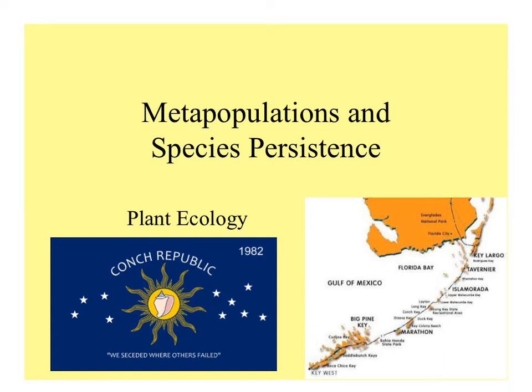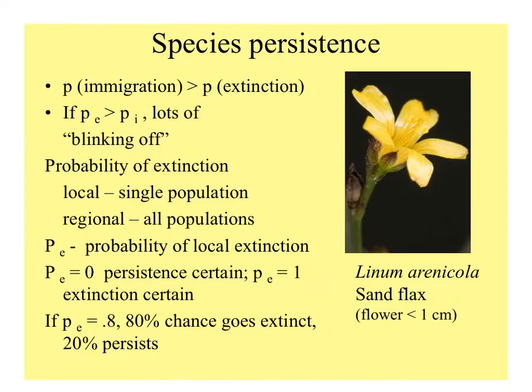Let's look at how metapopulations can play a role in the persistence of species, starting with an example from the Florida Keys. This is Linum erinicola, the sand flax, a beautiful little plant that's hard to find in big clumps of grass where it tends to grow, because its tiny flowers are less than a centimeter in size.